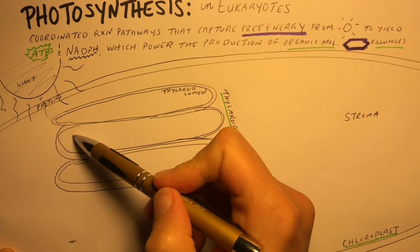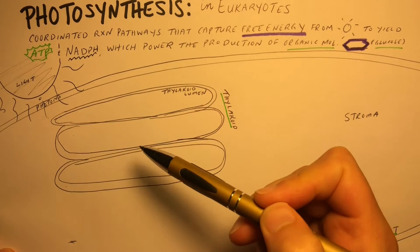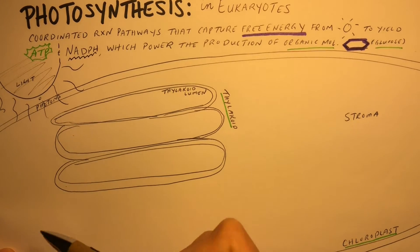Now our light-dependent reactions are going to happen within the thylakoid. Our dark, or carbon-fixation reactions, are going to happen within the stroma.